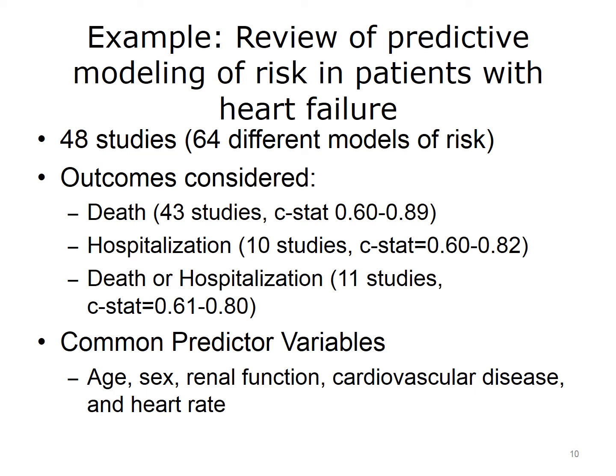There are many other applications of predictive modeling, since each outcome and set of patients may have different results. In a review of predictive modeling for patients with heart failure, Rahimi and colleagues looked at 48 published studies using 64 different models of risk. Outcomes were either death, hospitalization, or the combination. The 43 models of death had C statistics of between 0.60 and 0.89. The 10 models of hospitalization had slightly lower C statistics of 0.60 to 0.82, and the 11 studies predicting death or hospitalization had C statistics between 0.61 and 0.80. The most common predictor variables included age, sex, renal function, cardiovascular disease, and heart rate.